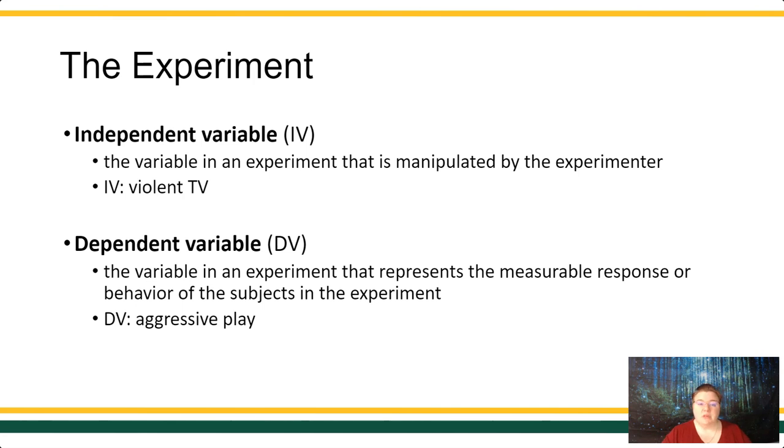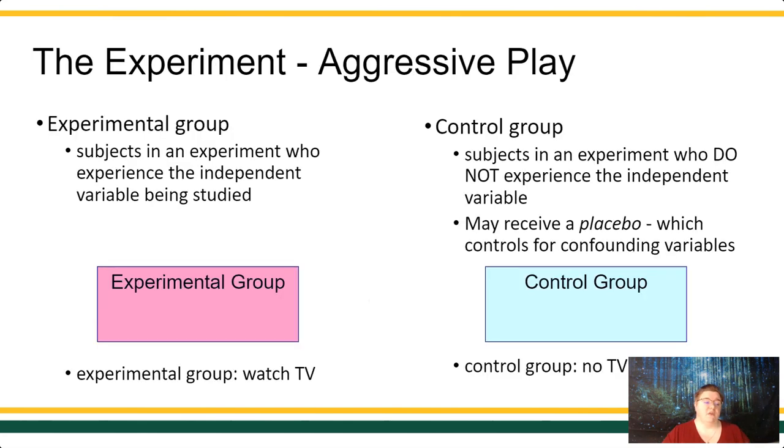Now there's a couple of different kinds of experiments. I'm going to go through just a couple of different variations here. Remember, we're talking about an experiment where we're evaluating aggressive play. So maybe I'm going to expose different clients to some violent television and then see whether or not they behave differently. My experimental group is going to get whatever my independent variable is. The experimental group is exposed to the independent variable that's being studied.